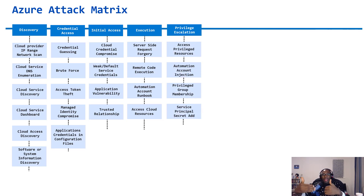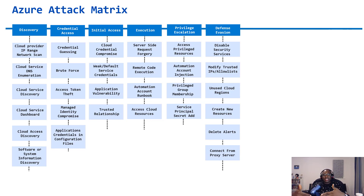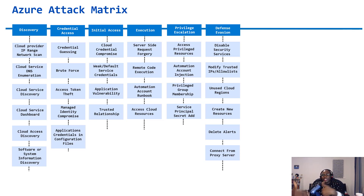Privilege escalation is where an attacker looks to gain more access beyond what they currently have — improving their permissions, moving from read-only to making modifications, or opening backdoors. Defense evasion is where an attacker ensures they're not detected. Dwell time — the time from when an attacker gains a foothold to when they're detected and kicked out — is very important. The longer the dwell time, the more auditing you need to do.